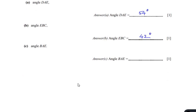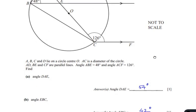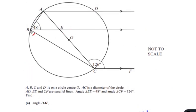Now let us look at the last part of the question: find angle BAE. In part A we found angle DAC as 54 degrees. We can see that line AD is parallel to line BE and AE is acting as a transversal line. Using the property of parallel lines, angle A is 54 degrees and angle E is also 54 degrees because they are alternate angles of the parallel lines AD and BE.